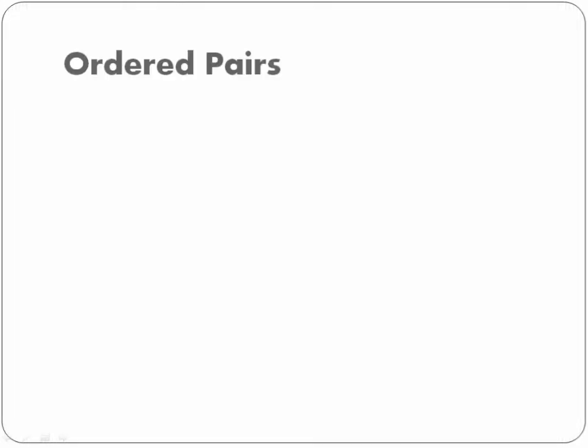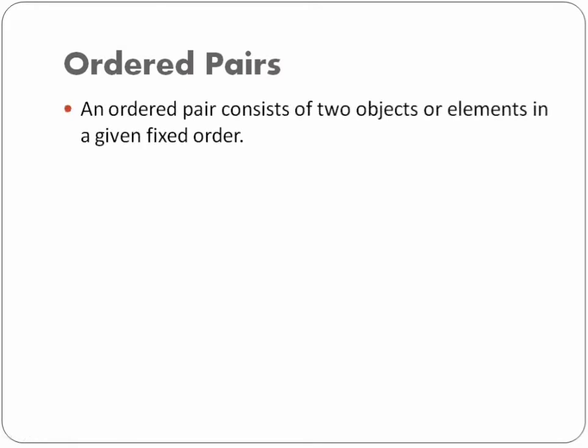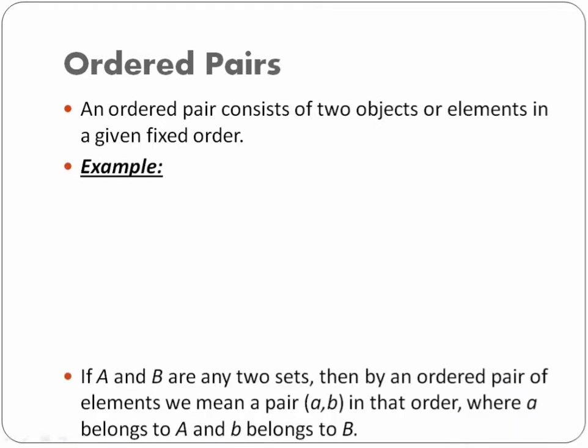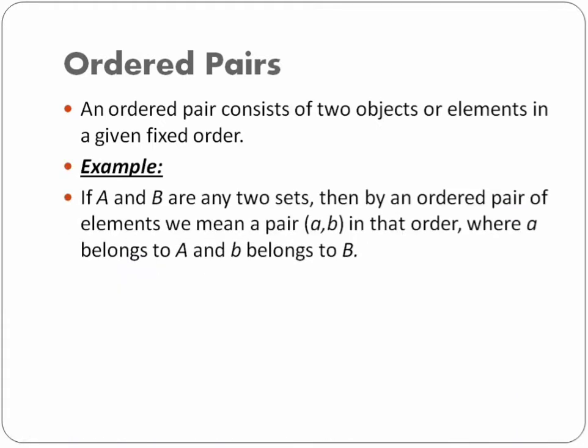The first thing we are going to learn in this chapter is called ordered pairs. Let's see what is the meaning of ordered pairs. An ordered pair consists of two objects or elements in a given fixed order. Let's try to understand using an example.